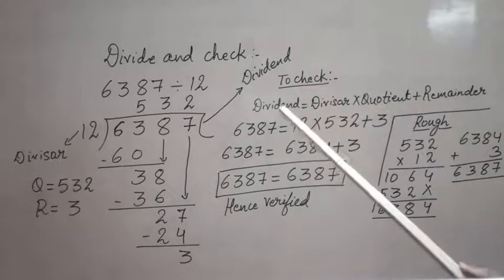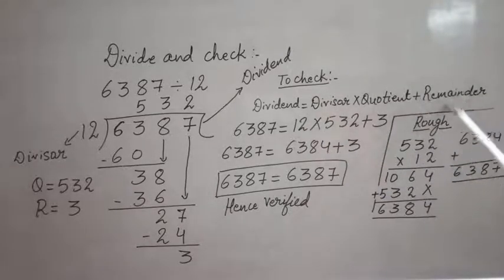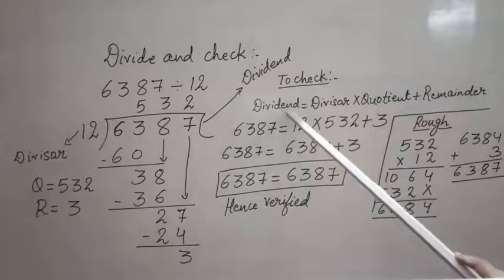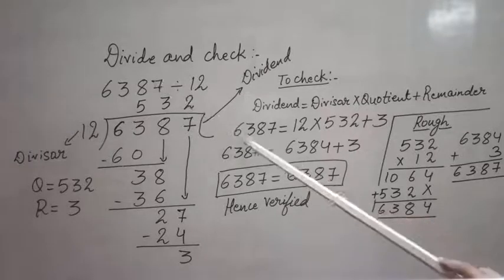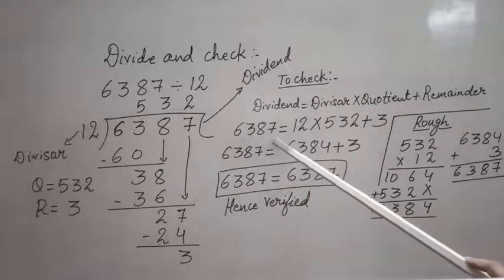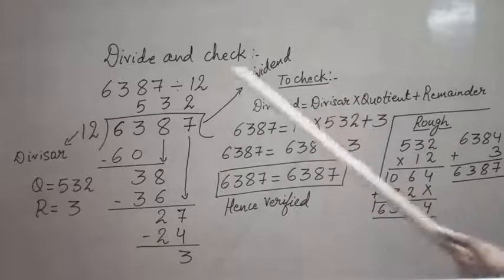...I know that dividend equals divisor times quotient plus remainder. So what is my dividend? 6387. So simply I have written here 6387, then equals to, then I have to write here divisor. My divisor is 12.